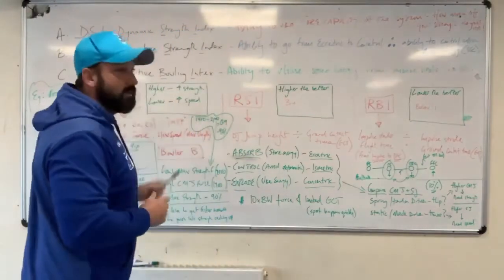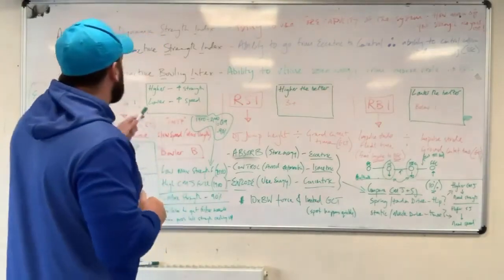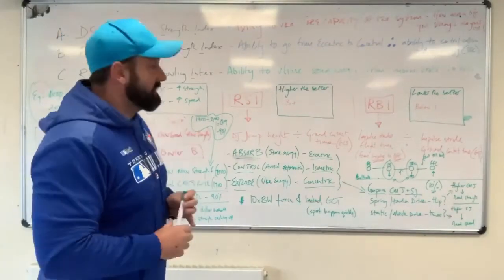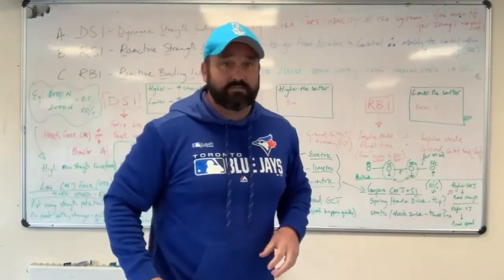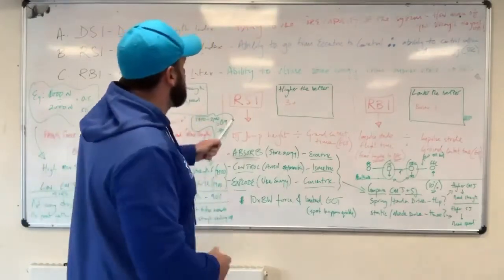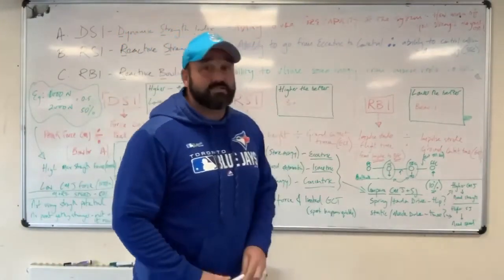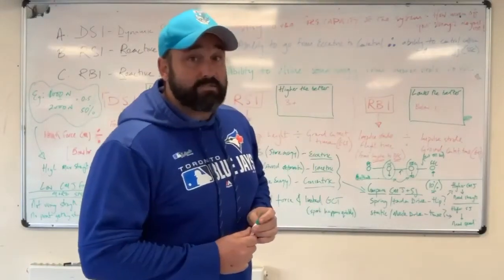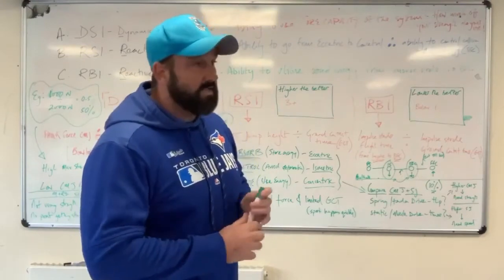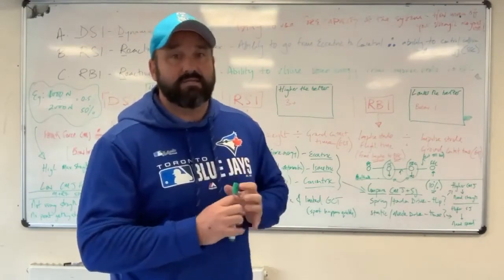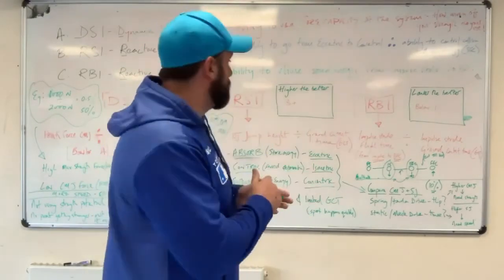The third one is the RBI — that's something unique to PIRSLAB. It's the reactive bowling index, and it's all to do with the impulse stride — that dictates everything. It's the ability to utilize the stored energy from the impulse stride into back foot contact; it's the quality of that node of fast bowling: impulse stride into back foot contact.